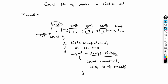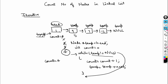When the condition temp equals null is reached, we exit the loop and return. Our count contains four, which is the correct length of the list — it had one, two, three, four nodes. So we simply return count, which gives us the number of nodes.